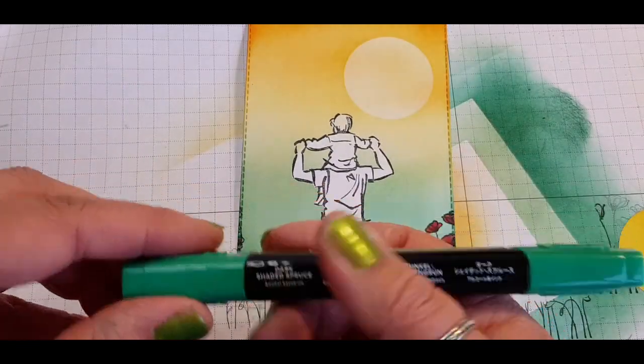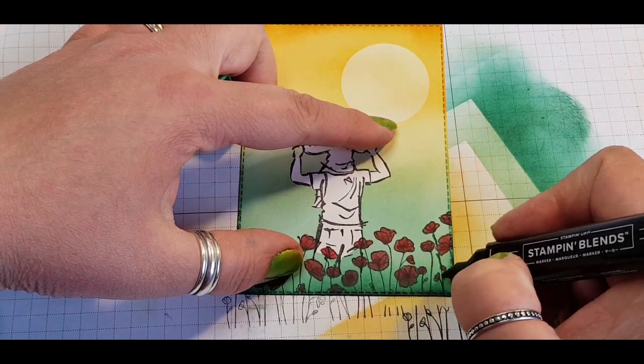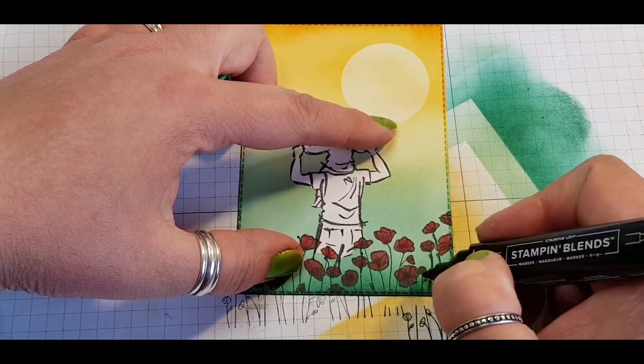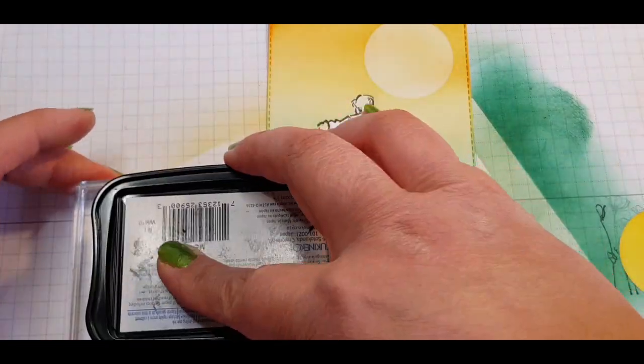It doesn't take long to color the individual flowers in and then just to make those stems stand out I'm coming in with my Shaded Spruce Dark Stampin' Blend and I'm just highlighting where the stems are.